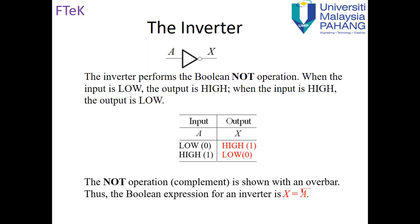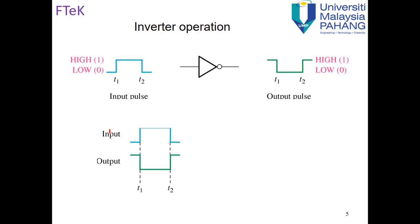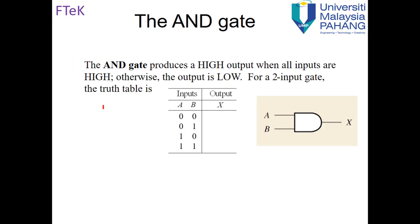In Boolean algebra we use the bar to represent NOT, so X equals A-bar (not A). If we have a waveform: when input is zero, the output will be one; when it changes to one, the output changes to zero. In microcontrollers we will use the time waveform to represent this.